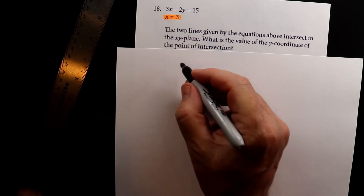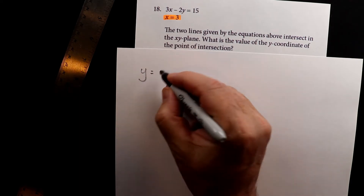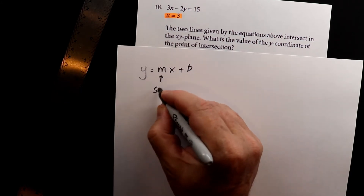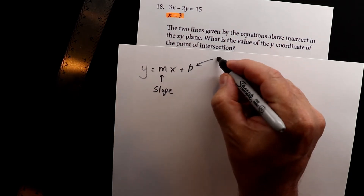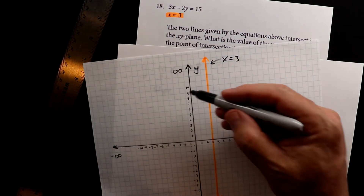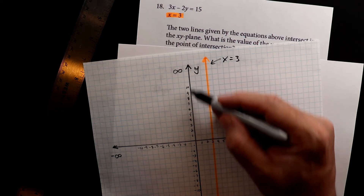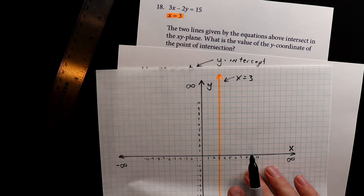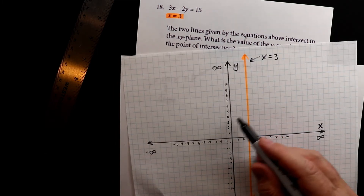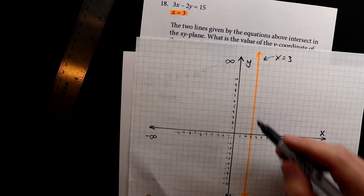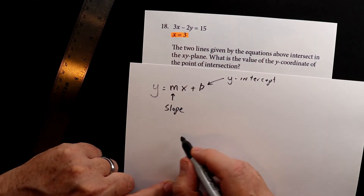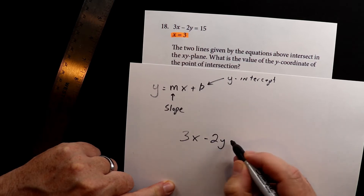I want to convert this into y equals mx plus b, where m is the slope and b is the y-intercept. The y-intercept means where does this line cross the vertical y-axis. We'll find the y-intercept, then find another point, and connect the two to create the line. We'll figure out where it crosses. So I'm going to take this equation: 3x minus 2y equals 15.